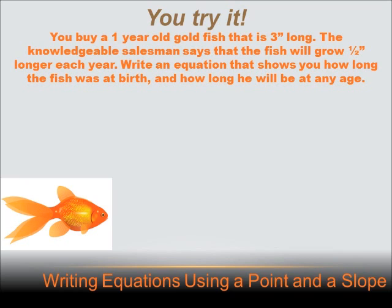Okay, in this problem, you buy a goldfish that's one year old and that's three inches long when you buy it. And the salesman says that the fish will grow at a constant rate of change of one-half inch per year. Can we write an equation that shows how big the fish was at birth and how long it will be at any age? Well, we know two things in this equation. We know what the slope is. The slope, or the constant rate of change, is one-half inch each year. That's one-half inch per one year. And we know one point. We know at one year it was three inches long.